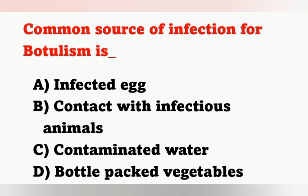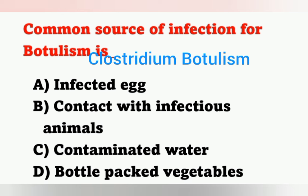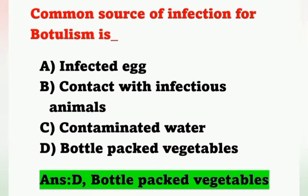The next question: common source of infection for botulism. Options: Option A, infected egg; Option B, contact with infectious animals; Option C, contaminated water; Option D, bottle-packed vegetables. Botulism food poisoning is caused by Clostridium botulinum, and it mainly occurs through improperly canned or packed food — specifically, improperly packed vegetables. Option D is the correct answer.